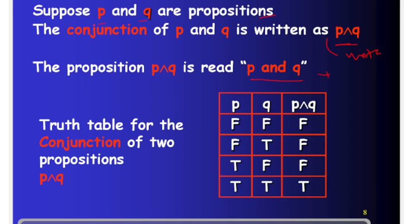Let's draw the truth table. The truth table for conjunction with two propositions p and q. We draw the table with p and q columns.